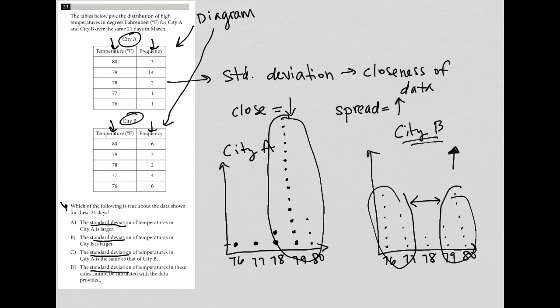so when I look at answer choice A it says the standard deviation of temperatures in city A is larger well no we just talked about that the standard deviation of temperatures in city B is larger well yes that's definitely true but again I like to answer I like to read all answers when it comes to these types of questions choice C the standard deviation of temperatures in city A is the same definitely not there's a difference in the closeness of the data between the two cities and D the standard deviation of temperatures